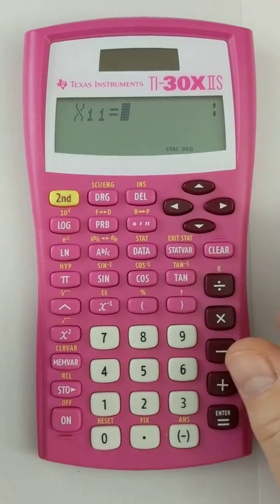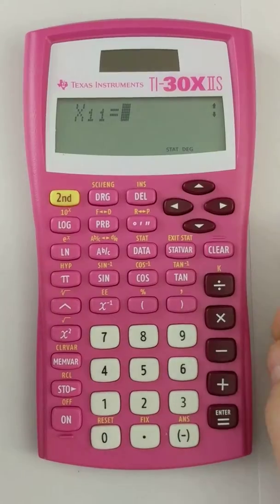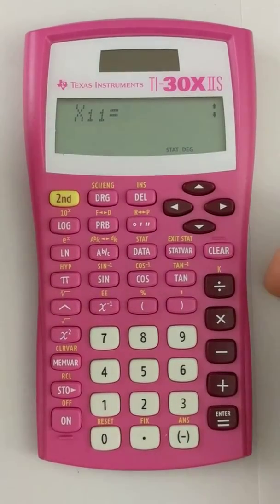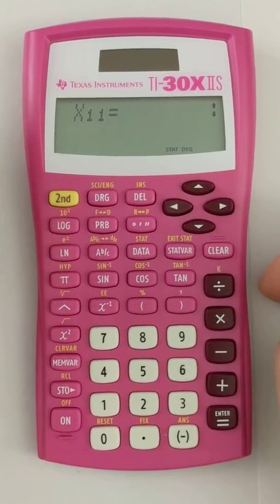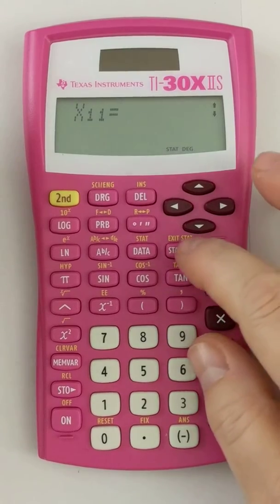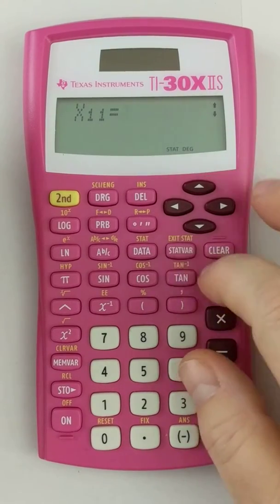All right, so that should give me 10 pieces of data. So the one variable statistics are the mean and the standard deviation. Next thing I'm going to do is hit this button right here, stat var.